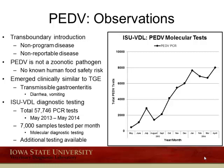At the ISU VDL over the past year, we've done considerable diagnostic testing, with PCR tests alone being over 57,700, primarily conducted through the winter months starting in October and extending through early spring of 2014. This represents about 7,000 to 8,000 samples per month. Additional testing is available for diagnostic cases beyond the PCR test alone.